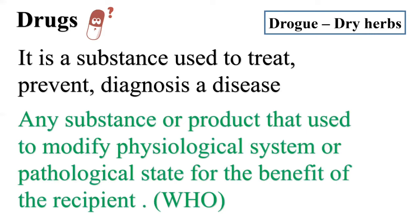Another definition given by the WHO: any substance or product that modifies the physiological system or pathological state for the benefit of the recipient. Drugs do not change the physiological activity fundamentally; rather they modify it — either increasing or decreasing it. For example, normal urine formation is 1.5 liters per day; furosemide is a drug that increases urine formation, thus increasing physiological activity.